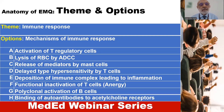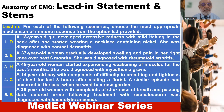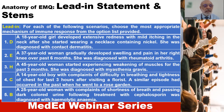Here is an example of an EMQ. The theme is immune response, the options are mechanisms of immune response, and there are eight options all related to mechanism of immune response. The lead-in statement is: for each of the following scenarios, choose the most appropriate mechanism of immune response from the option list provided. And then there are five stems.